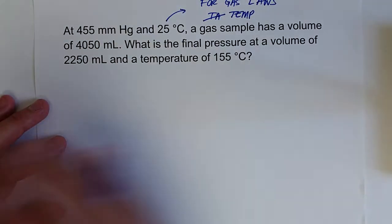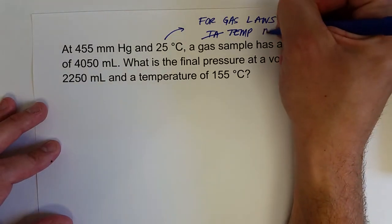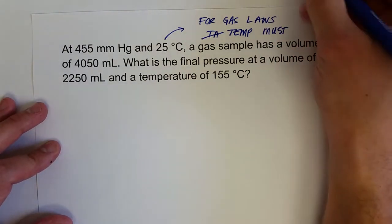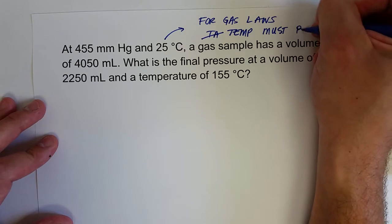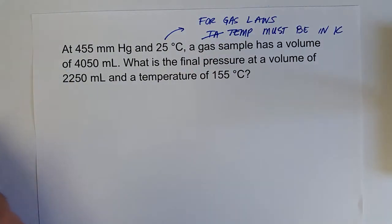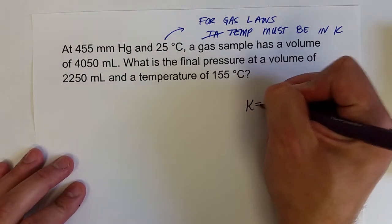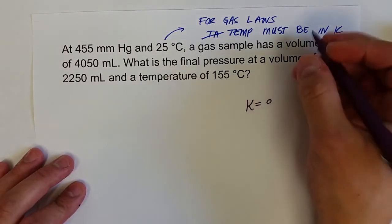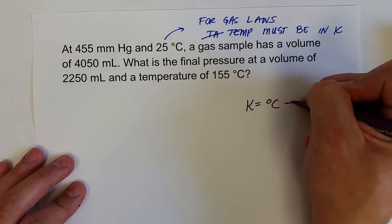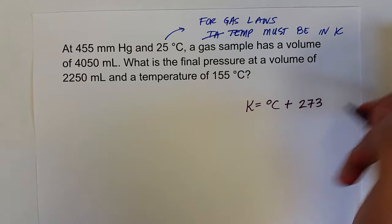And so if we double the temperature in Kelvin, we can expect a doubling of volume. We can't say that in Celsius. And so in the laboratory, we measure the temperature in Celsius. And so if we remember, we can just add 273 or 273.5 to get the temperature in Kelvin.